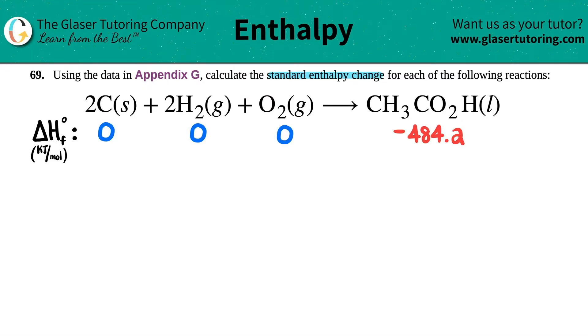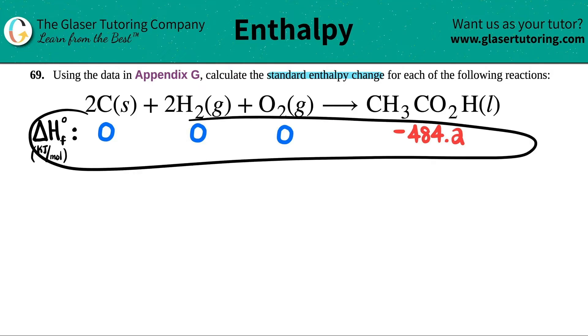We have two carbon solid plus two H2 gas plus O2 gas, which will yield CH3CO2H, and that's a liquid. What I did here was I went into Appendix G and got the delta H values for you.